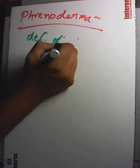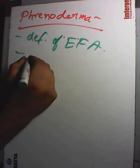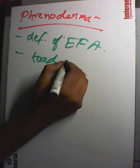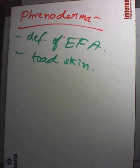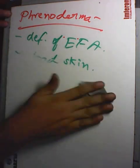Phrenoderma is deficiency of essential fatty acids. There is rough and dry skin — the skin of the person becomes toad-like, warty and rough. It is common in Karnataka, Kerala, and Gujarat, and is characterized by horny papular eruptions on the posterior and lateral aspect of the limbs. It can be treated rapidly by administering safflower oil, which contains linoleic acid.